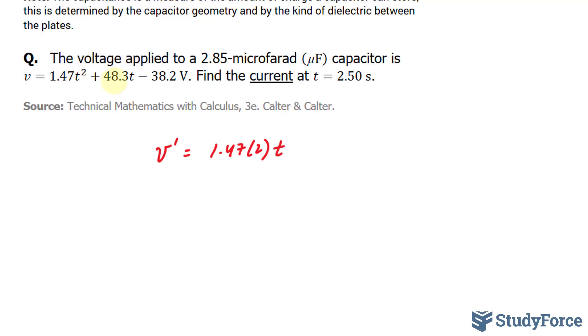The derivative of 48.3T is simply 48.3, and once again I use the power rule for that. The derivative of negative 38.2 is simply zero. Taking the derivative of a constant always gives you zero.